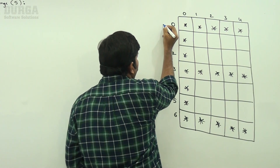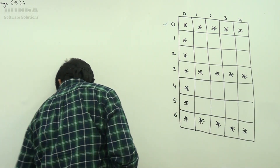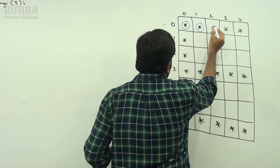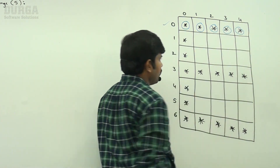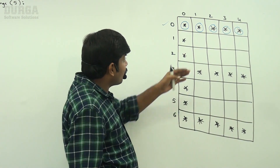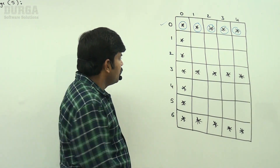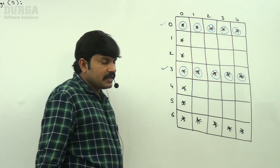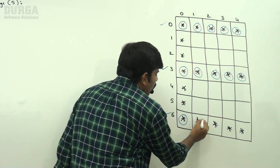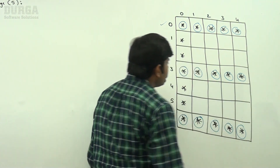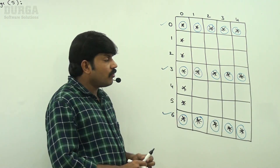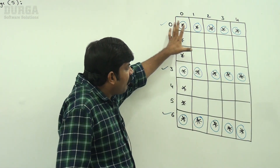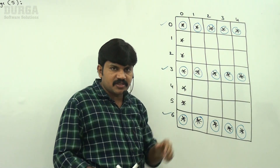In the first row, how many star symbols are there? Everywhere a star symbol is there. In row zero, all stars. In row three also, all stars. In row six also, all stars. So rows 0, 3, and 6 all have stars in every column.